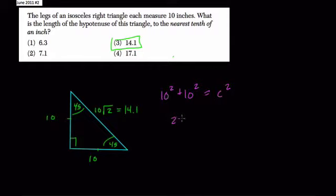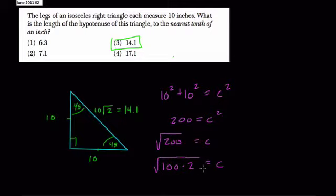10 squared plus 10 squared is 200 equals c squared. We want to know what does c equal, so square root of 200. 200 really is the same thing as 100 times 2. And take the square root of that. What's the square root of 100? Well, that's 10. Square root of 2, just the square root of 2.